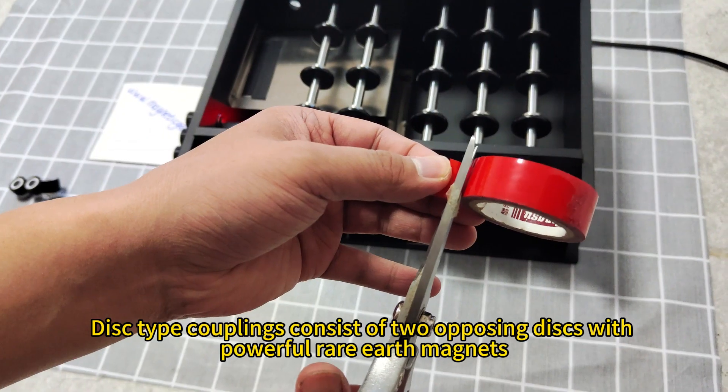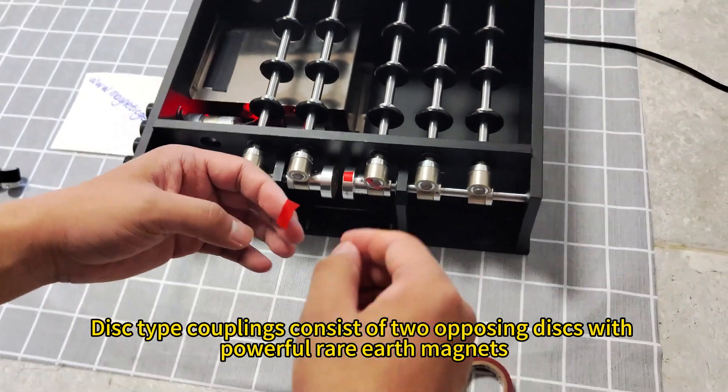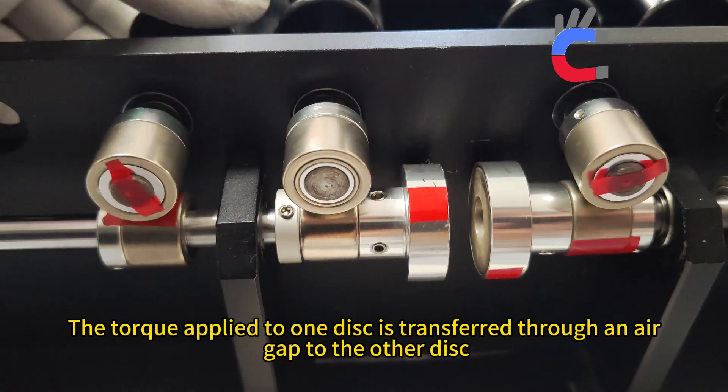Disc-type couplings consist of two opposing discs with powerful rare earth magnets. The torque applied to one disc is transferred through an air gap to the other disc.